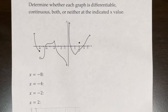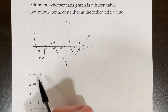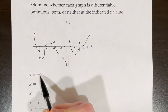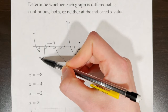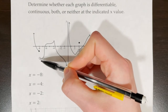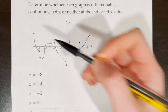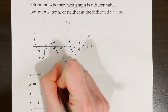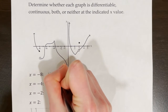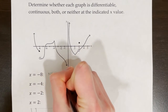Determine whether each graph is differentiable, continuous, both, or neither at the indicated x value. At x equals negative 8, we have a jump discontinuity in the graph, and we know that when a function is not continuous, it is also not differentiable. So this one is neither differentiable nor continuous.